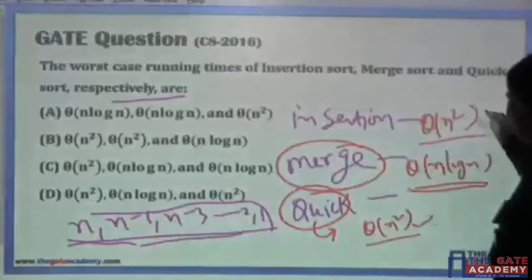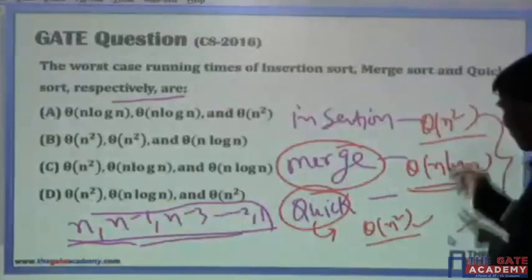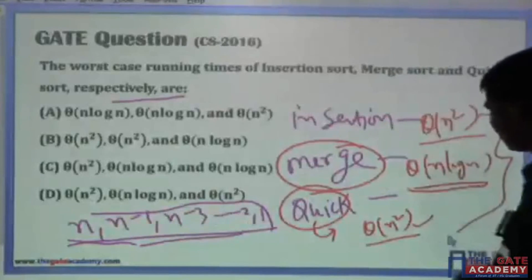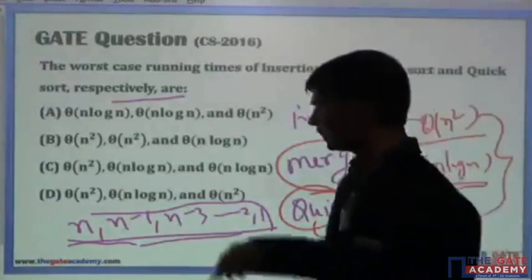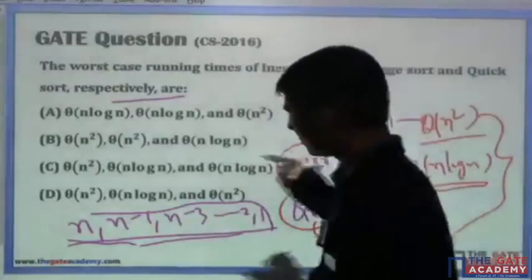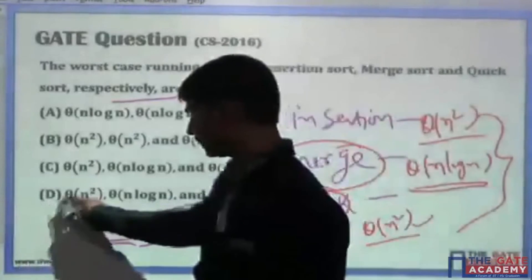So in the worst case, the time complexities are: insertion sort — n², merge sort — n log n, and quick sort — n², which correctly matches option D.